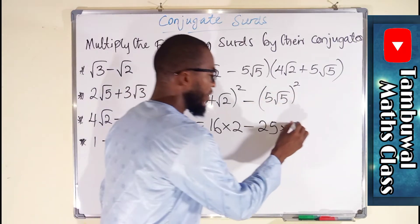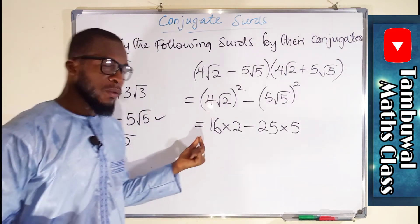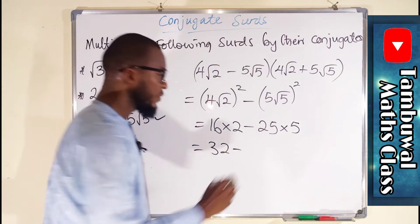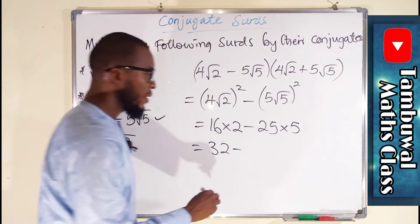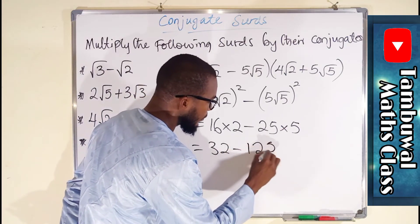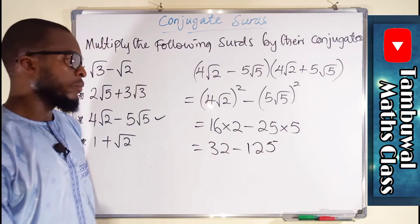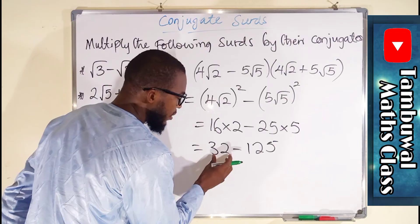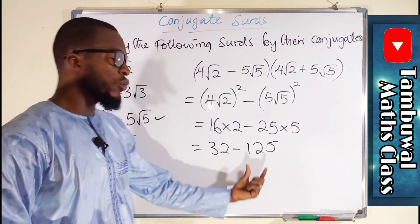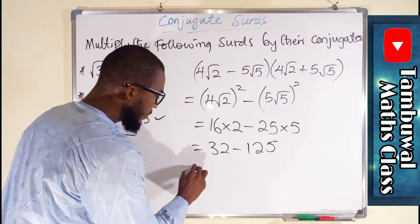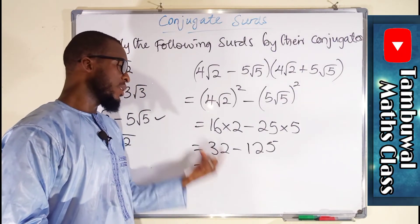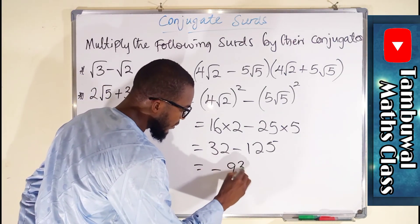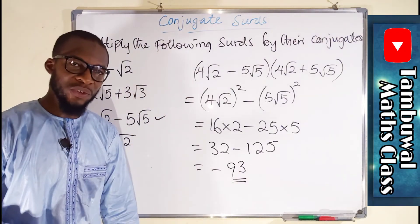16 times 2 is 32, minus 25 times 5 is 125. Since 125 is greater than 32, the answer will be negative, so we write 125 minus 32 then place a negative sign, giving negative 93. And negative 93 is a rational number.